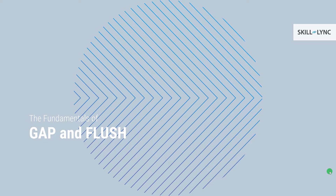Hello guys, here we are again with the Fundamentals of Gap and Flush course. This will be the seventh session of our course and I hope that till now you have understood and acquired the discussions and aspects we have covered. We are going to continue with more advanced subjects. In this session we will continue our discussions about processing tolerance that we had in the previous session, where we finished by showing you some examples.